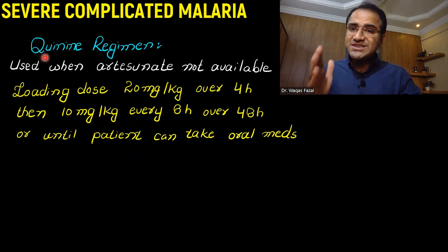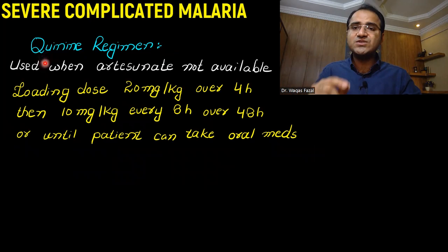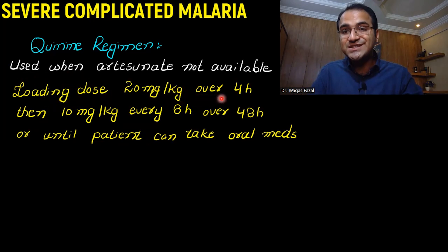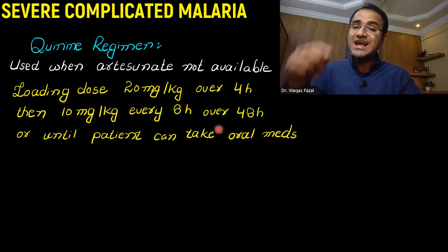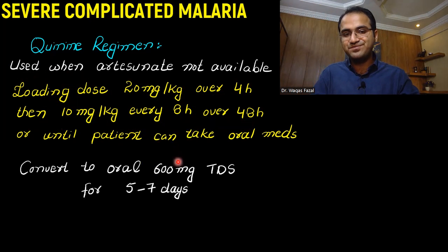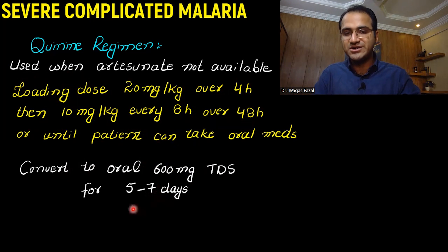If artesunate regimen is unavailable, you can use quinine regimen — but remember, artesunate is superior. The quinine loading dose is 20 mg/kg given over 4 hours, then 10 mg/kg every 8 hours over 48 hours, until the patient is conscious and able to take oral medication. You can then switch to oral quinine 600 mg TDS for 5 to 7 days when the patient can take oral drugs.